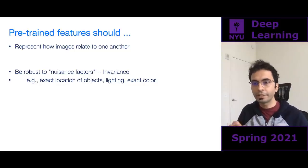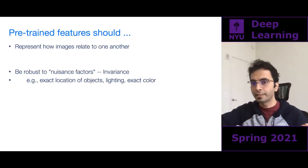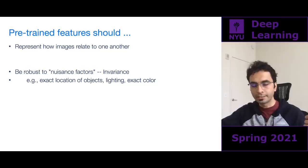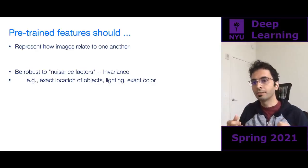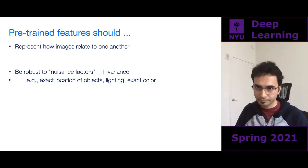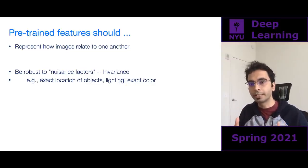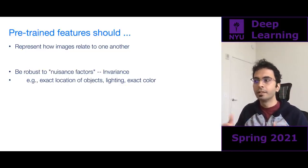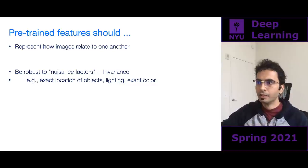Pre-trained features should satisfy two fundamental properties. One: they should be useful to represent how images relate to one another — a picture of a tree should be recognized as related to another tree picture, and not as related to a cat picture. Two: they should be robust to nuisance factors — I should be able to recognize a tree in different lighting, weather conditions, and with different numbers of leaves.